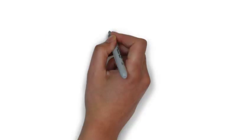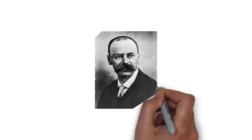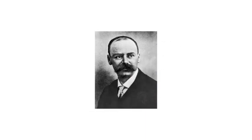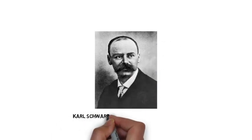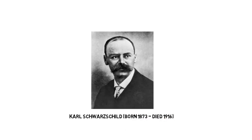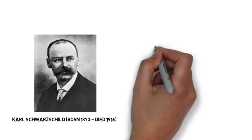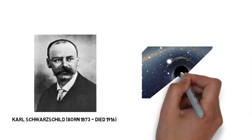In 1916, just before he died, the German physicist and astronomer Karl Schwarzschild, born 1873, died 1916, discovered black holes.